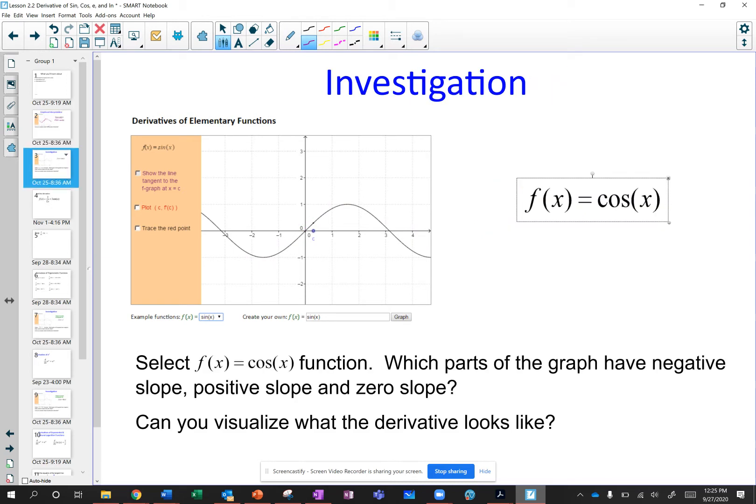What about the derivative of cosine? Let's look at the slopes. We notice from the left, the slopes are negative, negative, negative, negative, and then we get a 0.